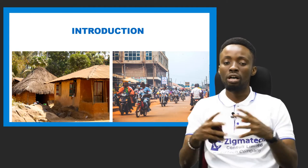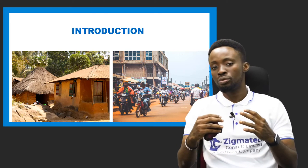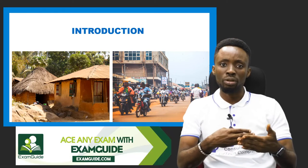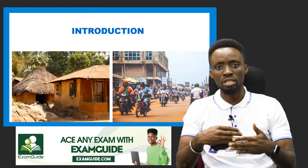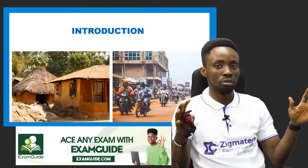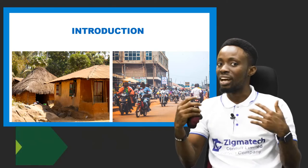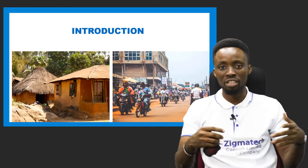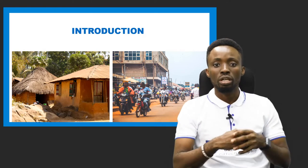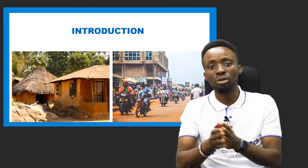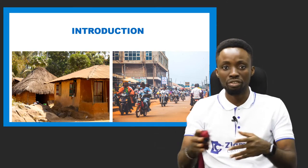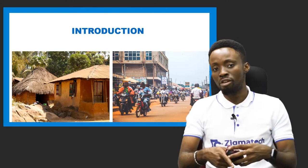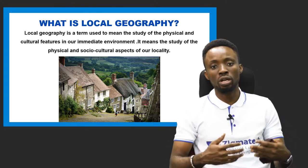If you look at your immediate environment, there are actually two categories of settlements that you will see. The first one is usually a developed kind of settlement — you see tall buildings, cars, and businesses. The second one is less developed — you see bushes, less developed houses and infrastructure. All these things are what we call our immediate environments, and in geography, we refer to it as local geography.